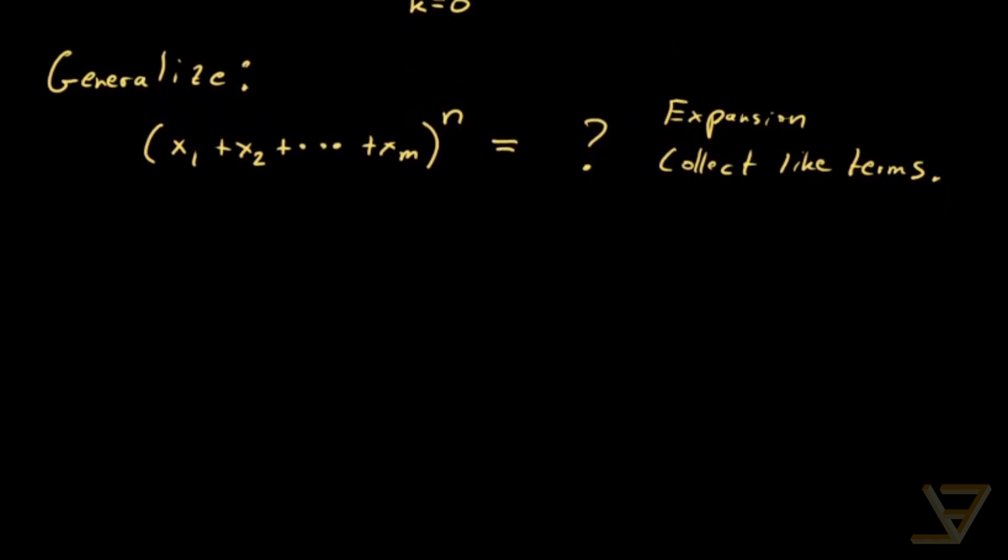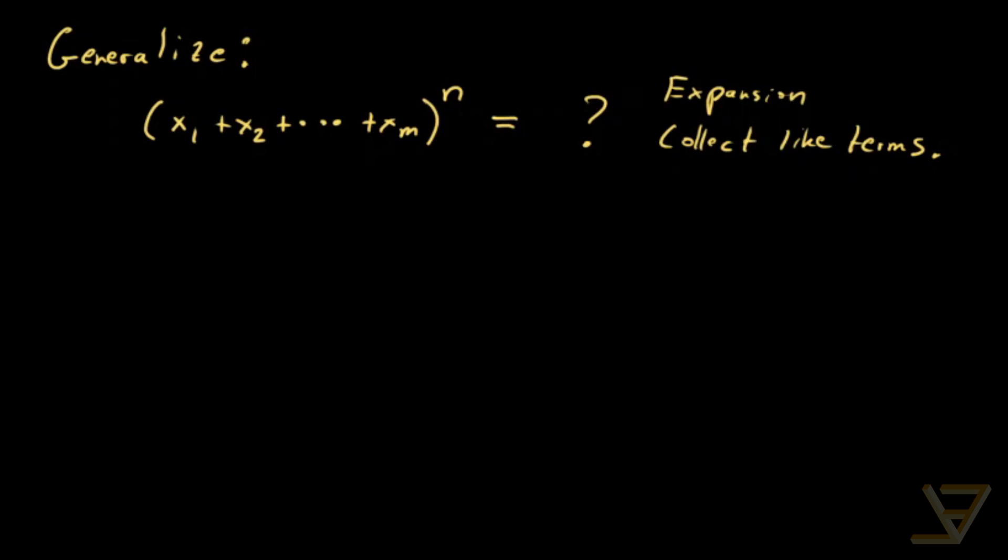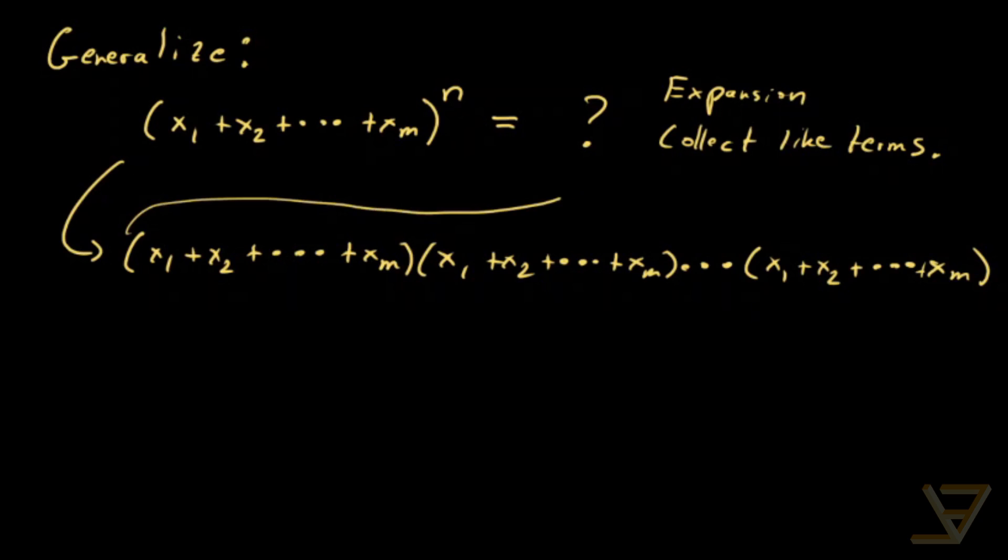So there's two tasks to be done here. For the expansion, we can tell what it is by a theorem that can be proven by induction. So this expression here, if we write it out, it's x1 plus x2 all the way through to xm times x1 plus x2 all the way through to xm. And we keep going like this n times until we get x1 plus x2 all the way through to xm. So we have n factors.